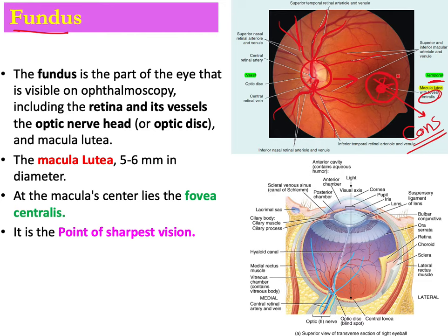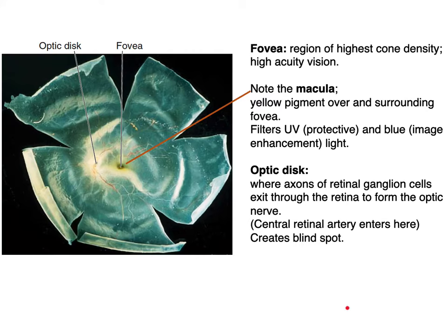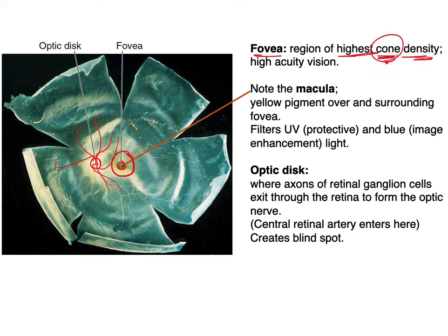The macula lutea is about four to five or five to six millimeters in size and is the point of sharpest vision. A dissected eye specimen shows the optic disc with central retinal artery and veins, and lateral to it the macula lutea — yellow in color — with the fovea centralis depression at its center, the region of highest cone density.